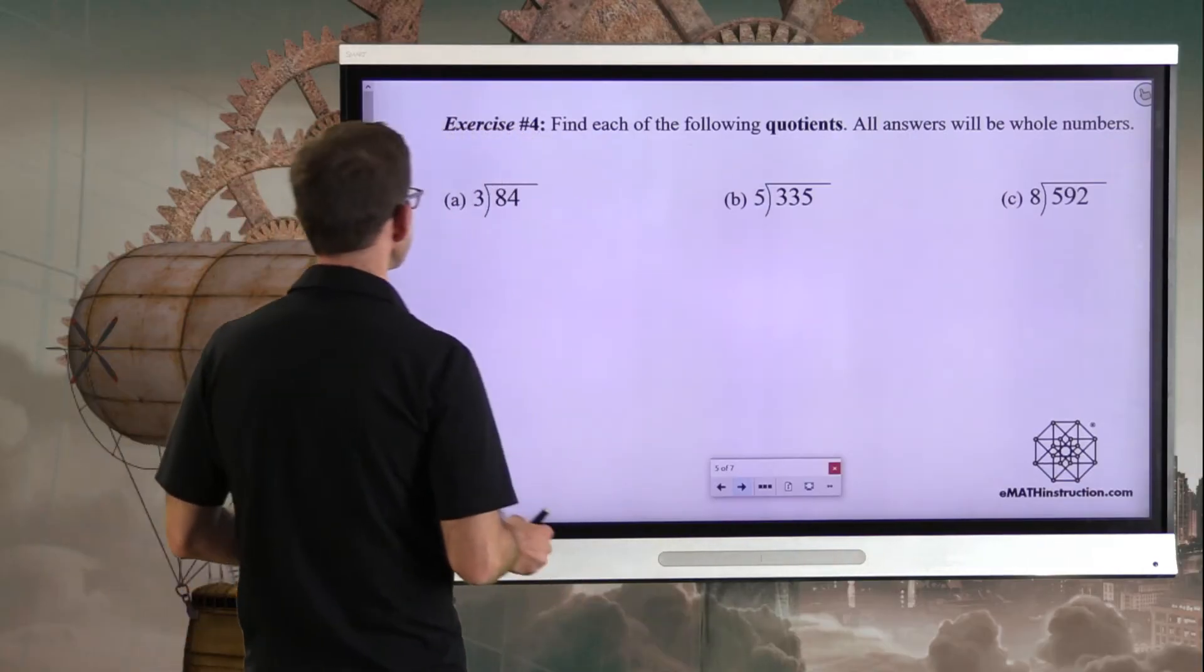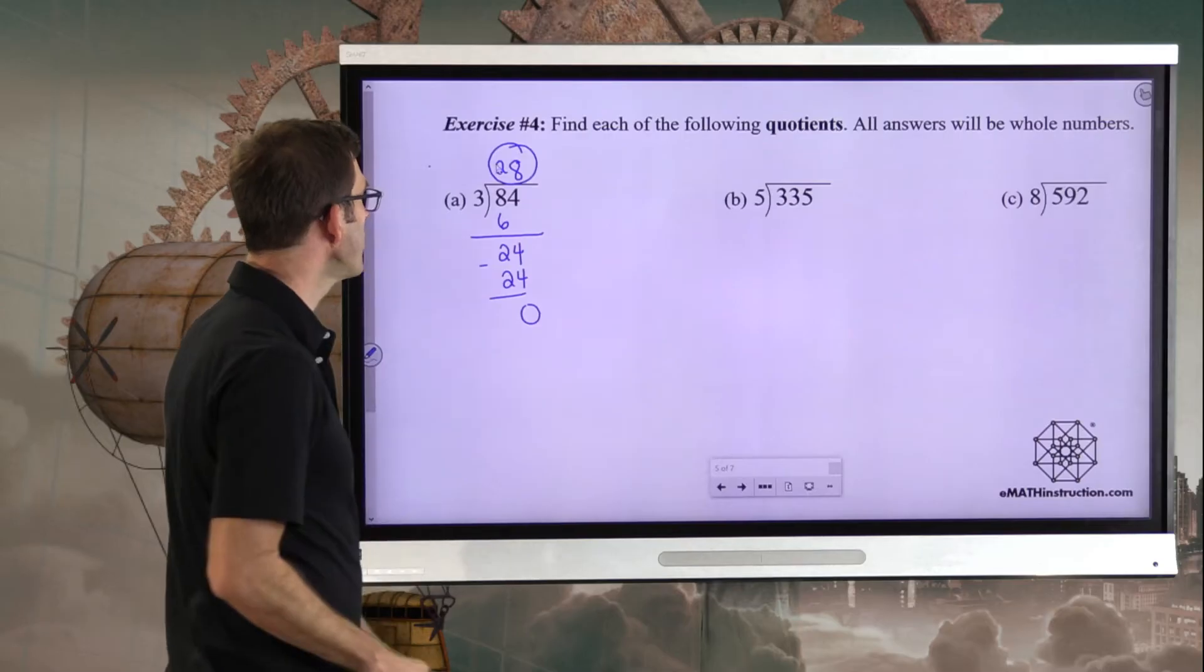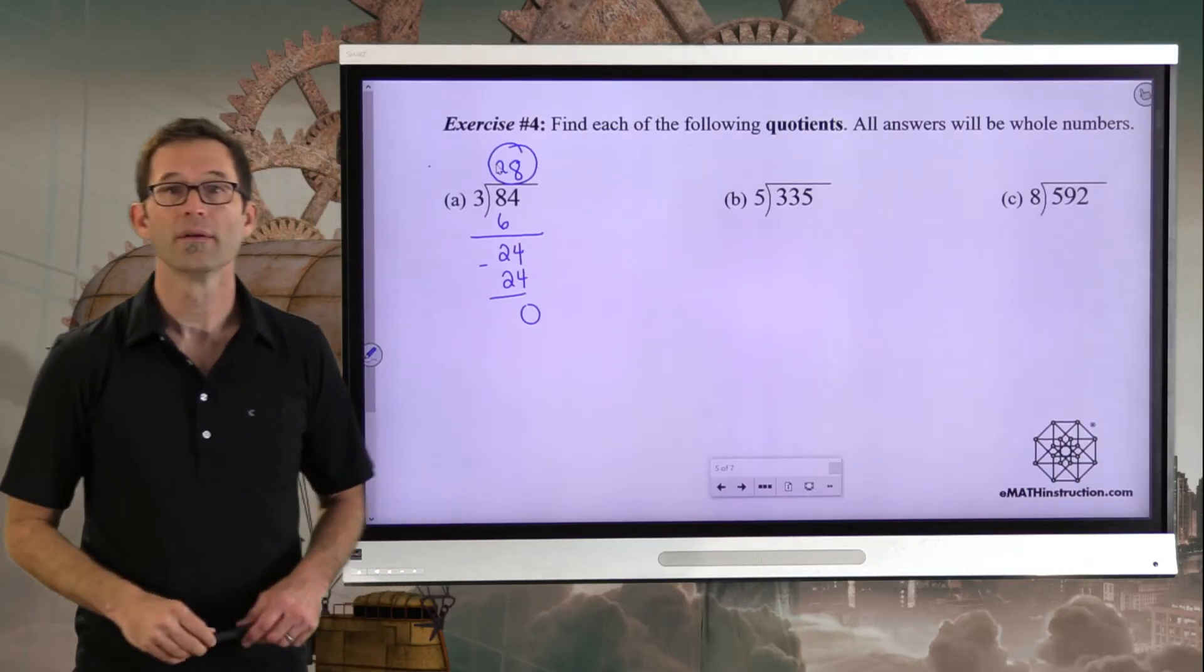If I want to figure this out, I think to myself, how many times does three go into eight? Well, it goes in there up to two times. Two times three is six. Eight minus six is two. And then I bring that four down. And now how many times does three go into 24? It goes in there eight times. Eight times three is 24. I subtract and I get zero. So 84 divided by three is 28.